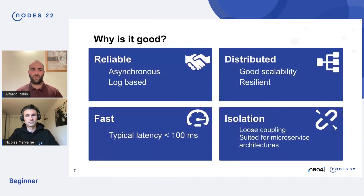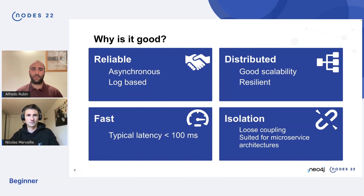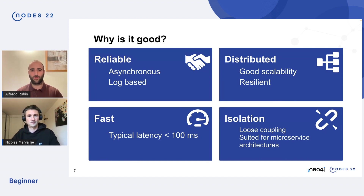Why is it good? First of all, it is reliable. Kafka offers an asynchronous and log-based message system. This means that if Kafka is unavailable, the data replication process will resume from the last transaction offset. And if Neo4j is, for some reason, not available, the data replication process will resume from the last message that Kafka Connect consumed.